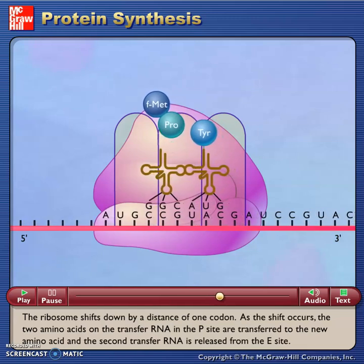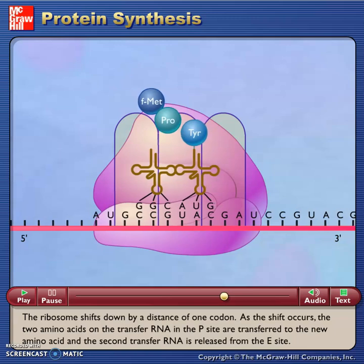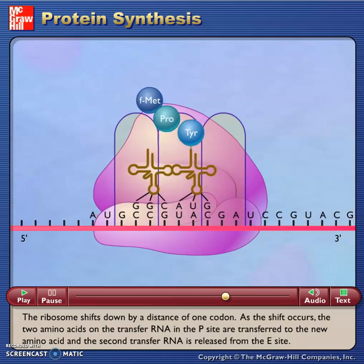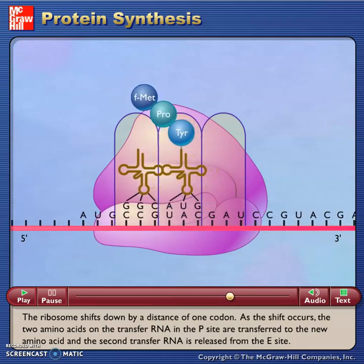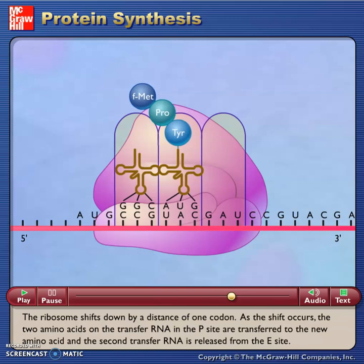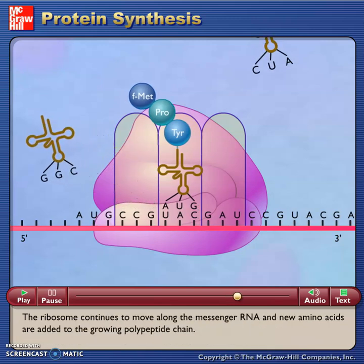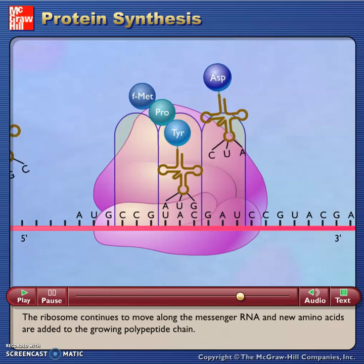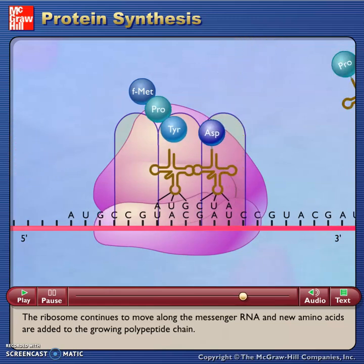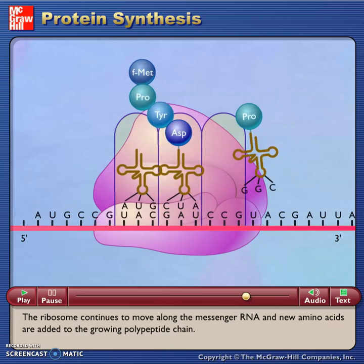As the shift occurs, the two amino acids on the transfer RNA in the P-site are transferred to the new amino acid and the second transfer RNA is released from the E-site. The ribosome continues to move along the messenger RNA and new amino acids are added to the growing polypeptide chain.